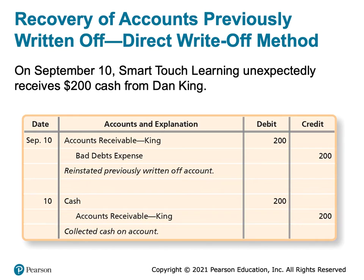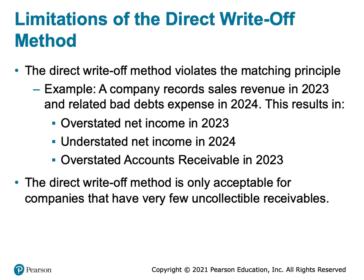If the customer happens to pay us unexpectedly in the future, we have to reverse the written-off uncollectible account, reinstate it, and then receive the cash. First, we reinstate the written-off account by debiting accounts receivable and crediting bad debt expense. Then in the next transaction, we show receiving cash and again eliminating the accounts receivable for King.